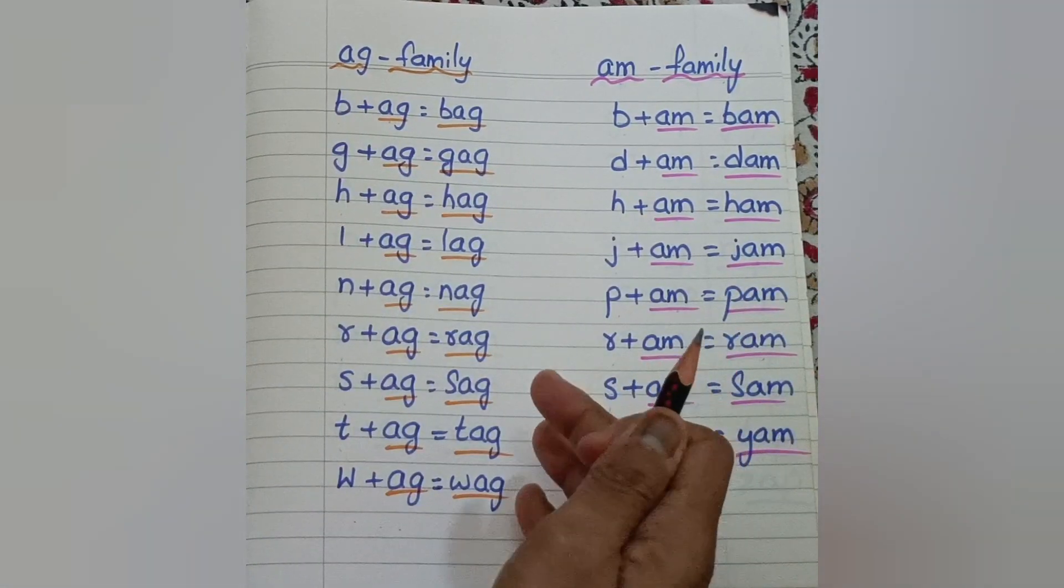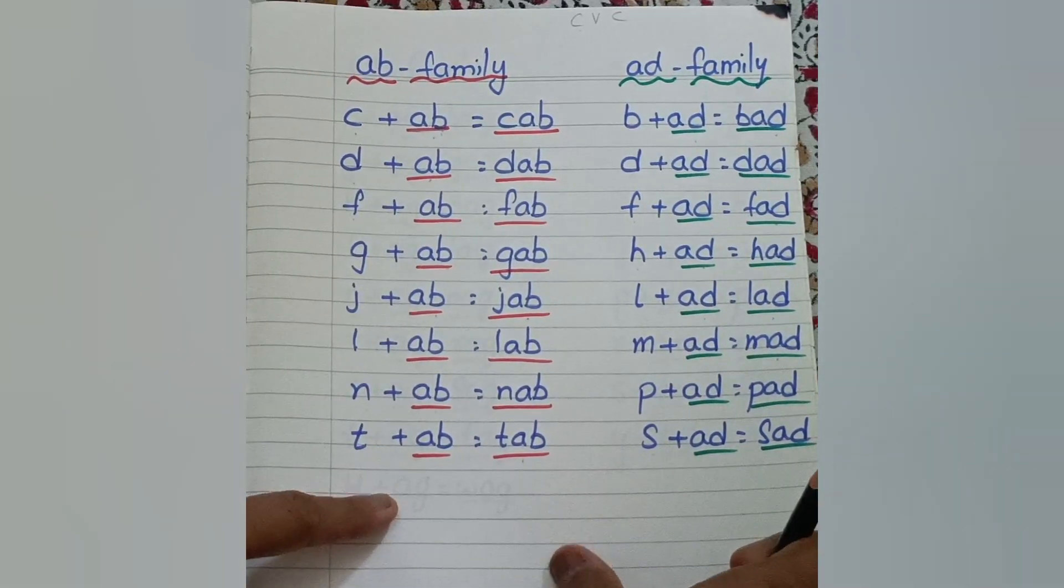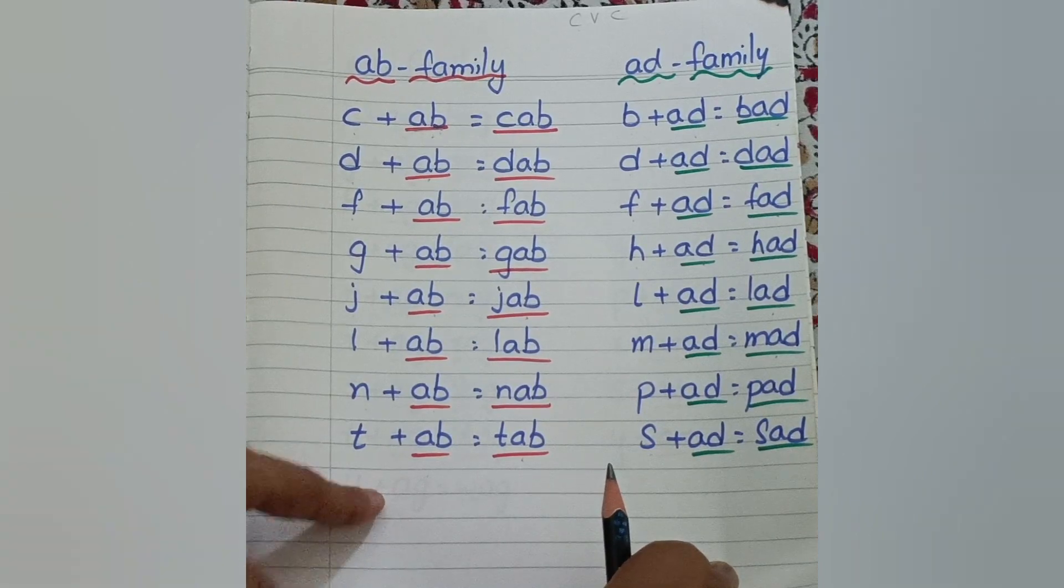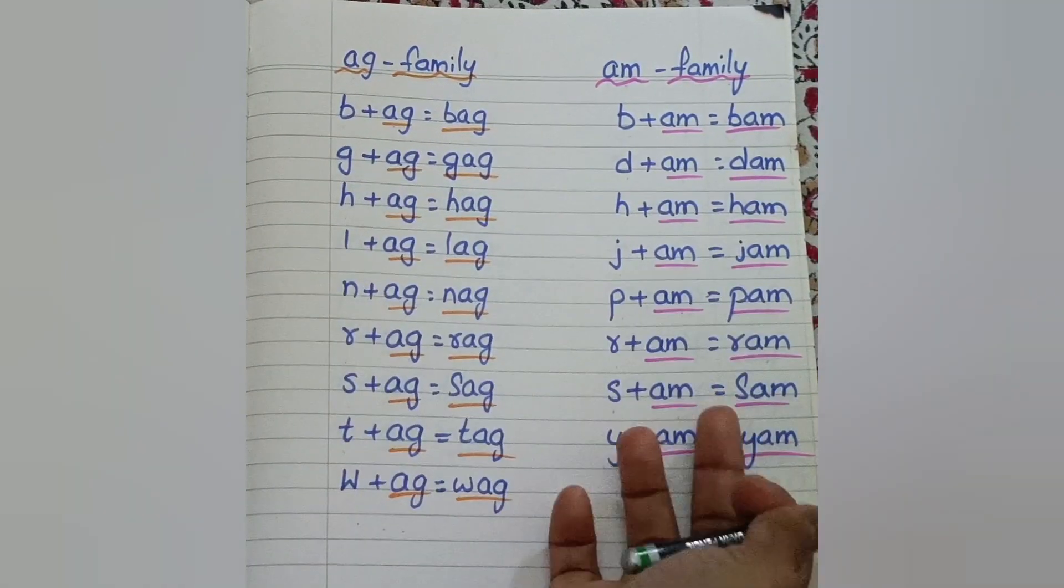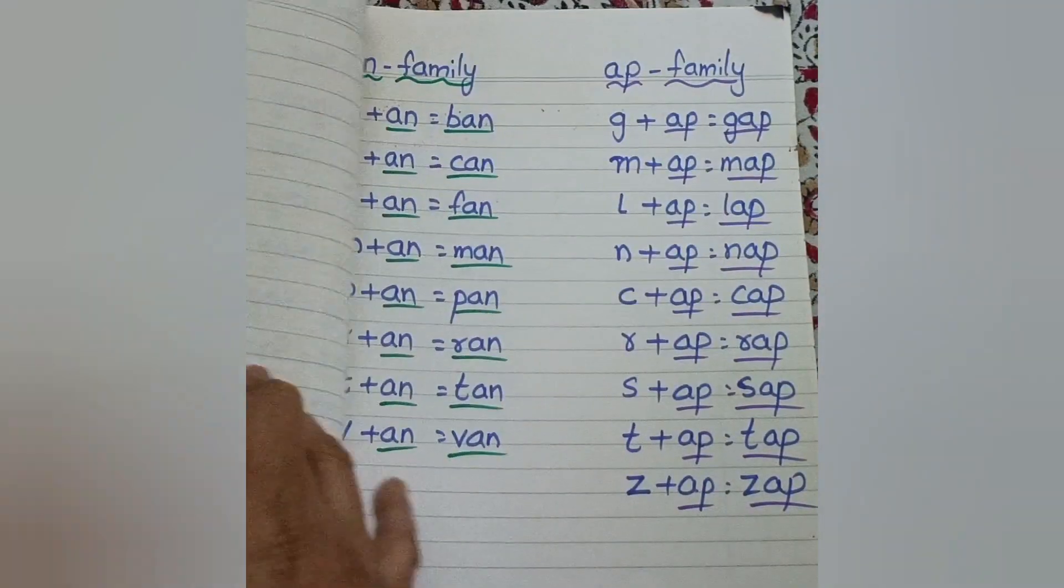So don't take all these families in one day. First you teach Ab family for two to three days. If the child is able to read this Ab family, then introduce Ad family, then introduce Ag family, then introduce Am family.